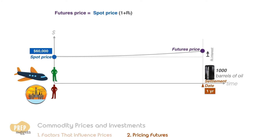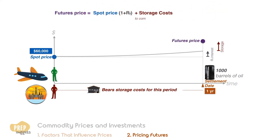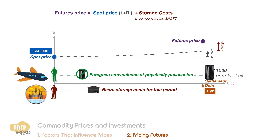Moreover, the airline avoids having to pay for the storage of the oil for that period. The storage costs are borne by the short who is holding onto the barrels of oil. The storage costs should be added to the futures price to compensate the short for bearing the storage costs. However, as the airline forgoes the convenience of physically possessing the oil for its operations, it should be compensated for this inconvenience. As such, the convenience yield should be subtracted from the futures price.